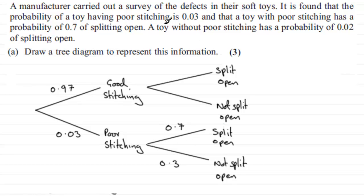We're also told that a toy without poor stitching, so in other words, a toy with good stitching, has a probability of 0.02 of splitting open. So that must be this one here. Good stitching, and then splitting open, it's got a probability of 0.02. These two must add up to 1, so that must mean this must be 0.98.